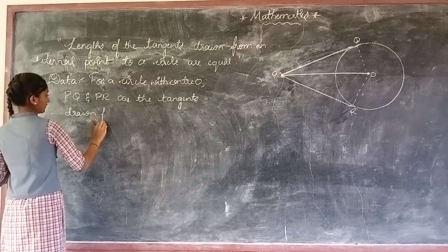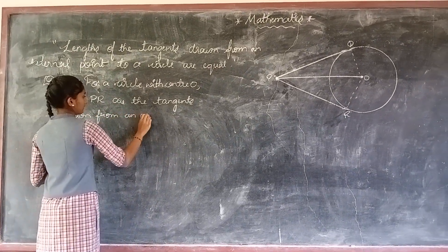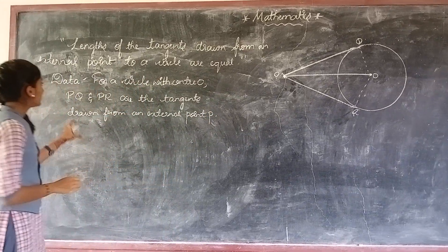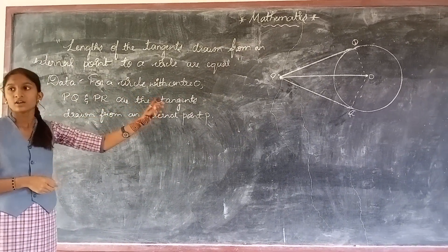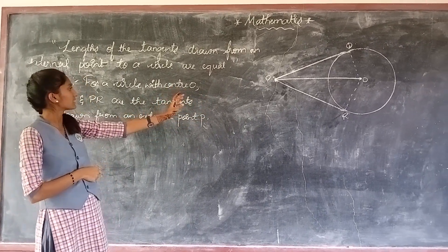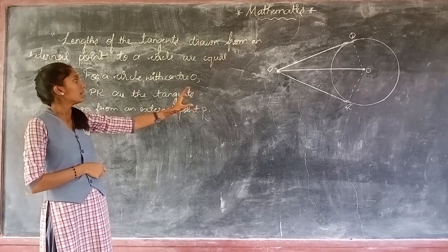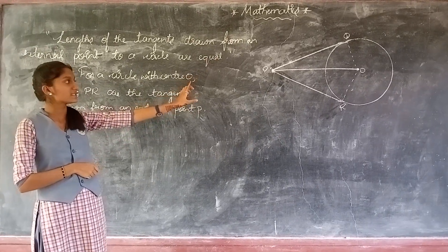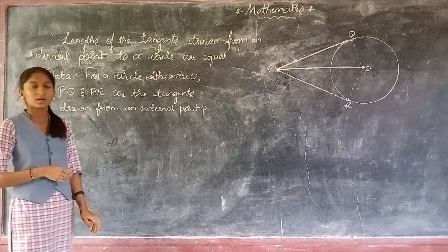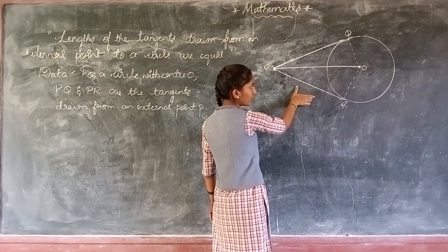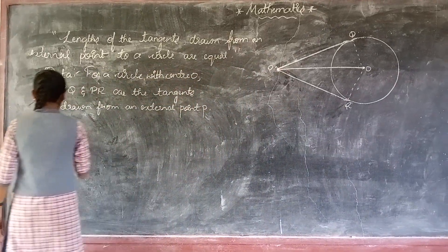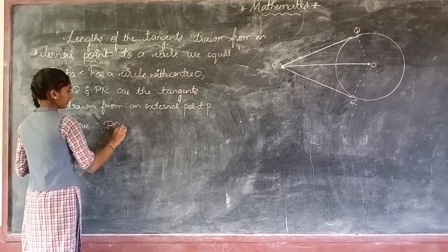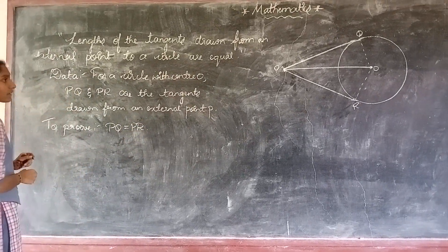Tangents drawn from an external point P to a circle with center O — we have drawn PQ and PR as the tangents from external point P. Now we can prove that these tangents are equal in length. To prove: PQ is equal to PR.